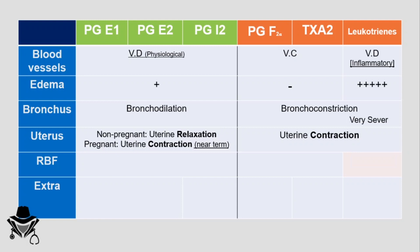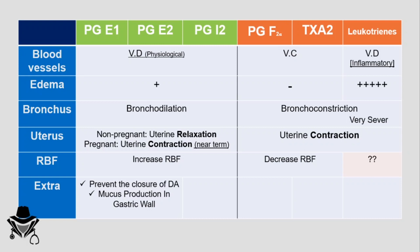The bad prostaglandins — prostaglandin F2α and thromboxane A2 — also cause uterine contraction and can sometimes act as abortive agents. For renal blood flow: the good prostaglandins increase renal blood flow, while prostaglandin F2α and thromboxane A2 decrease it. For leukotrienes, the effect on renal blood flow is not yet well understood. As extra effects, prostaglandin E1 and E2 can prevent closure of the ductus arteriosus and play a role in mucous production in the gastric wall.